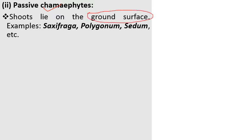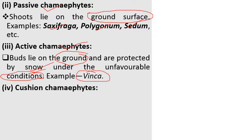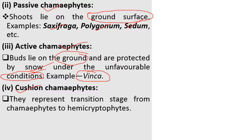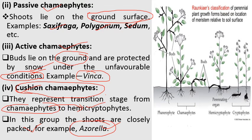The next class of Chamaephytes is Passive Chamaephytes, in which the shoots lie close to the ground surface. Examples include Saxifraga, Polygonum, and Sedum. Third are Active Chamaephytes, which lie on the ground and are protected by snow under unfavorable conditions, occurring at higher altitudes — for example, Vinca (Catharanthus roseus). Finally, Cushion Chamaephytes represent a transition stage between Chamaephytes and Hemicryptophytes, with shoots closely packed together — for example, Azorella.